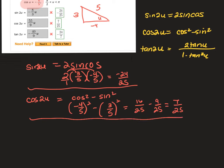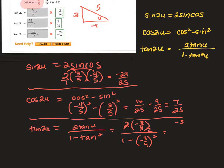And then tangent 2u is 2 tan u over 1 minus tan squared, which is 2 times negative 3 fourths over 1 minus negative 3 fourths squared. Negative 6, well this would be 3 halves to get kicked off.